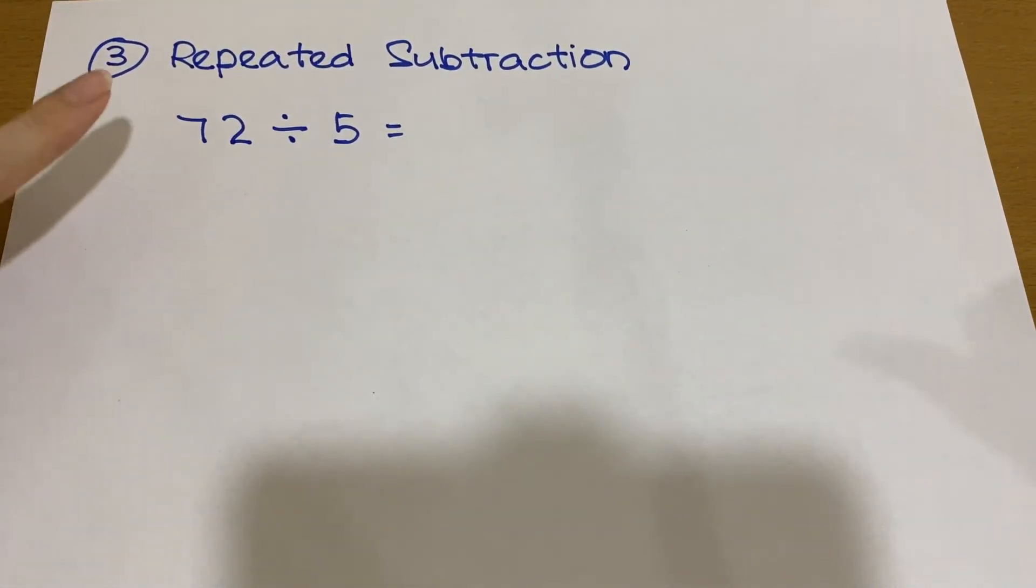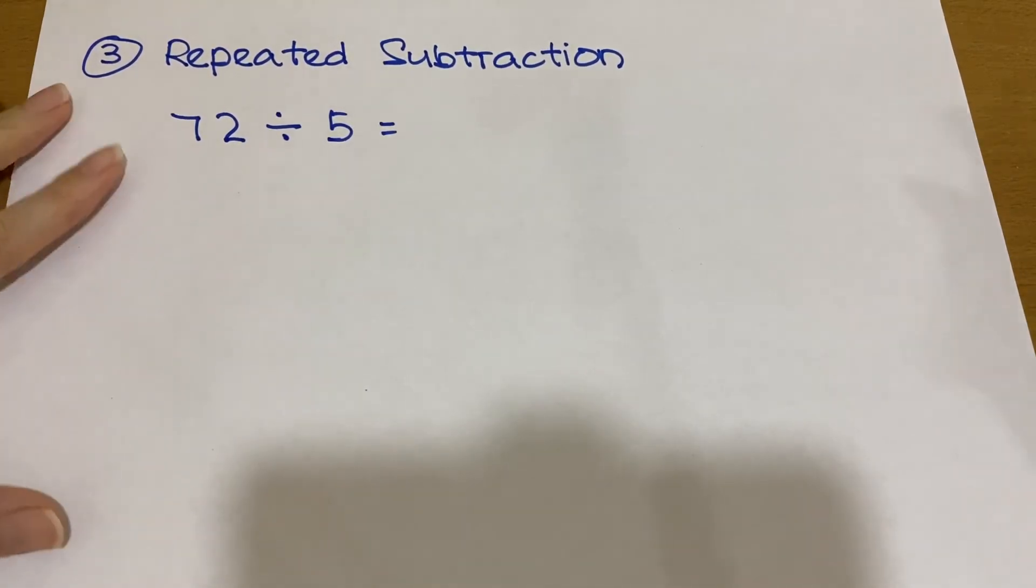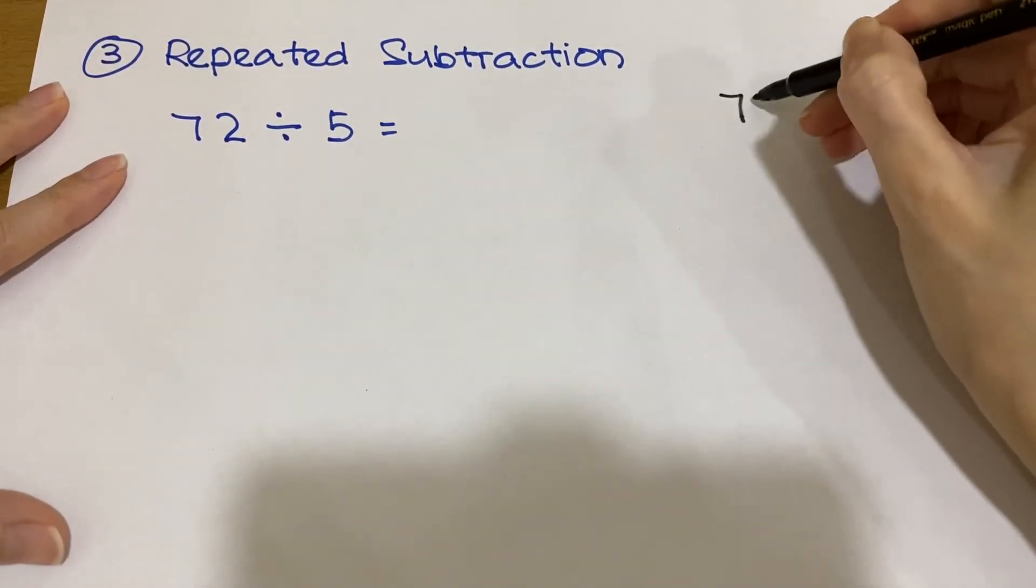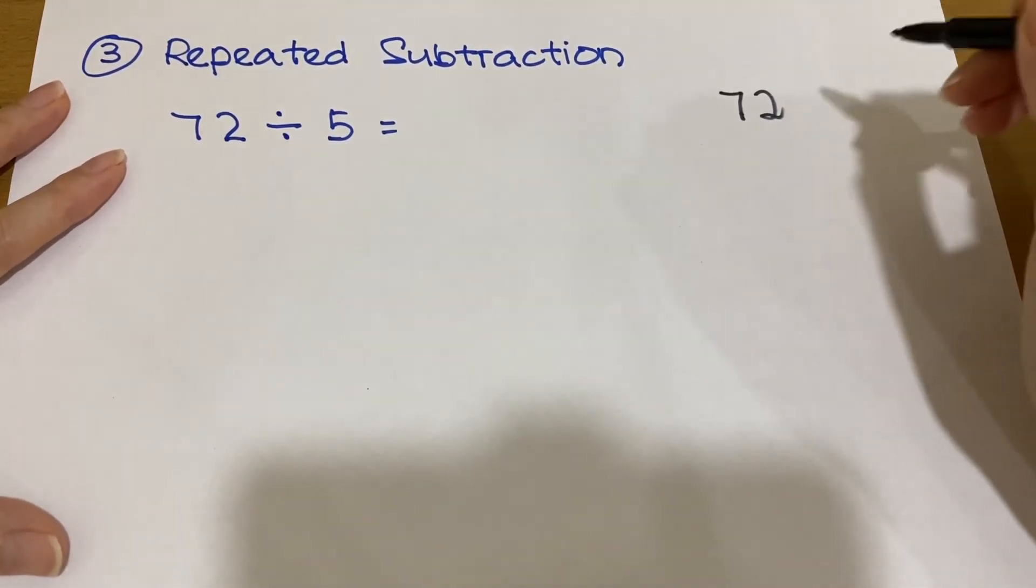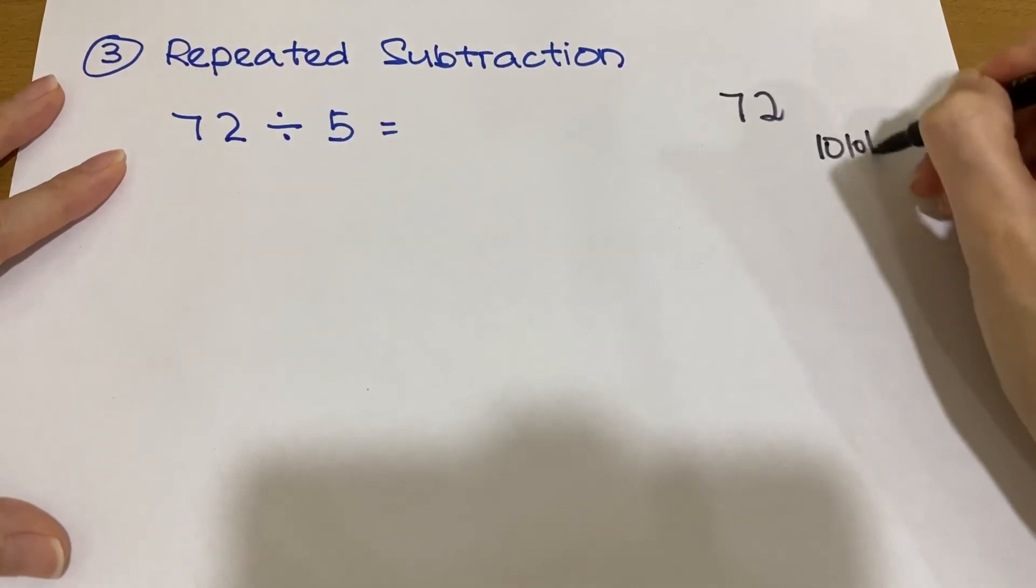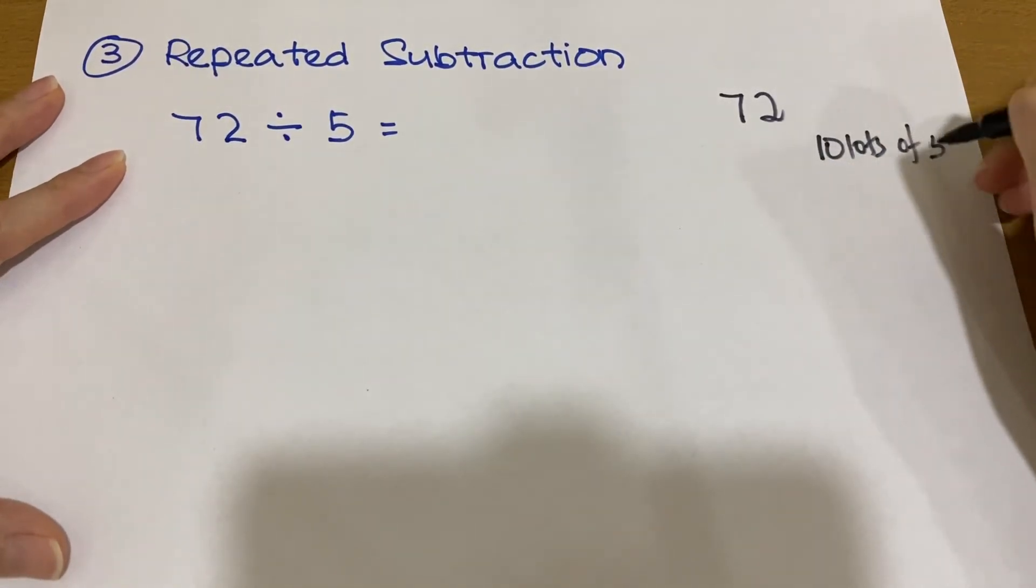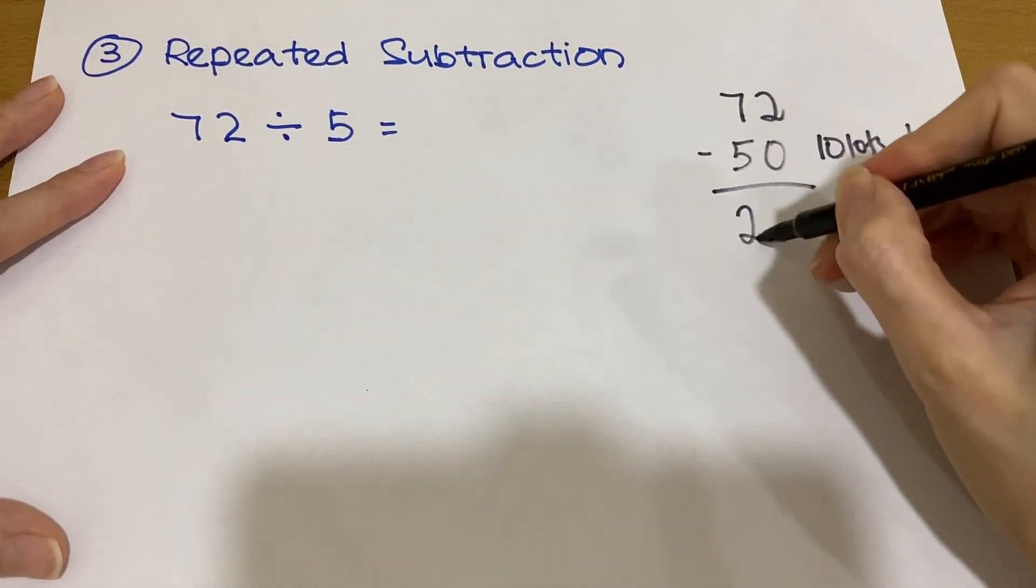Next, the third method will be repeated subtraction. For the same question, 72 divided by 5. You can see here, 72 divided by 5. So we know that 10 times 5 is 50. We have 10 lots of 5. So if you minus 50, you will have 22.